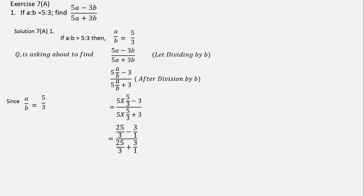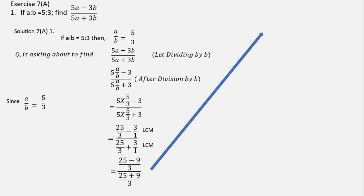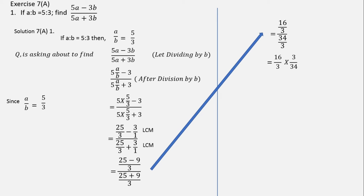If we solve this further, we'll be having 25/3 minus 3/1, over 25/3 plus 3/1. After taking LCM, this becomes (25 minus 9)/3 over (25 plus 9)/3, which gives 16/3 over 34/3. Moving the denominator upward, it becomes 16/3 × 3/34. The 3s cancel, giving 16/34, and further simplified this becomes 8/17, which is your answer.